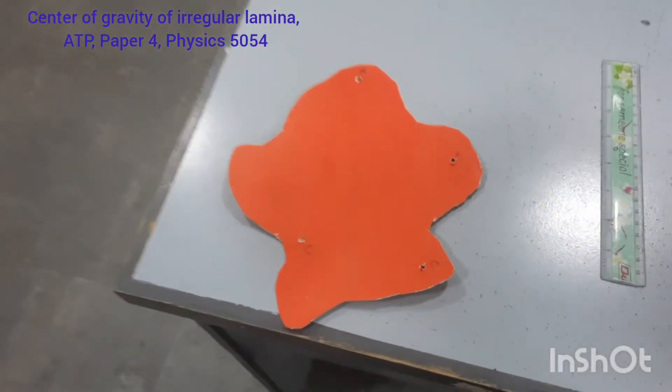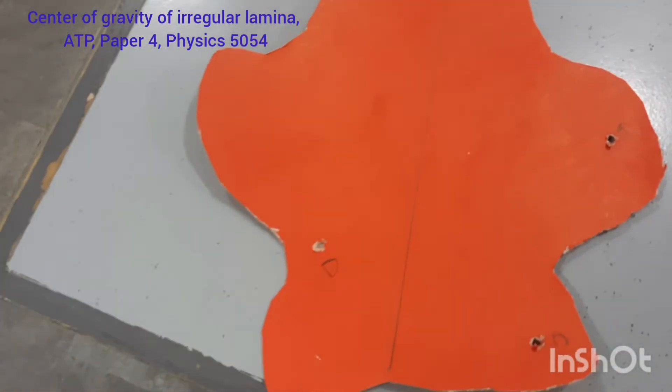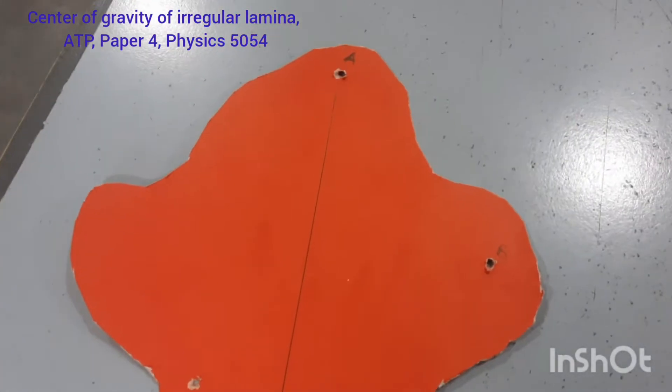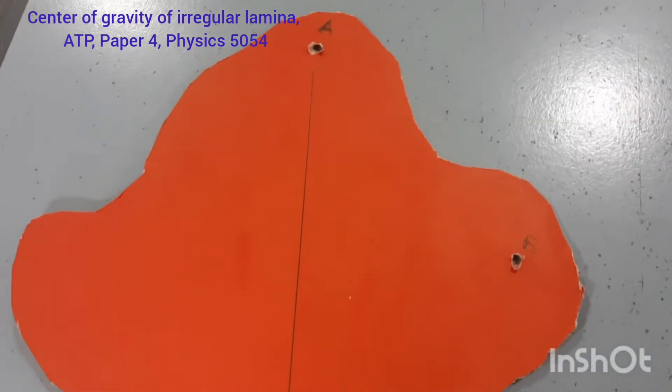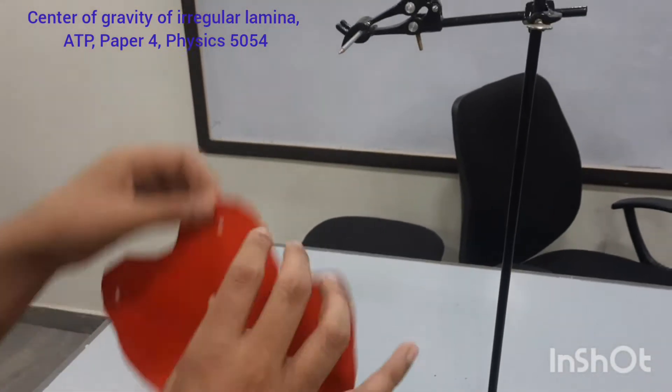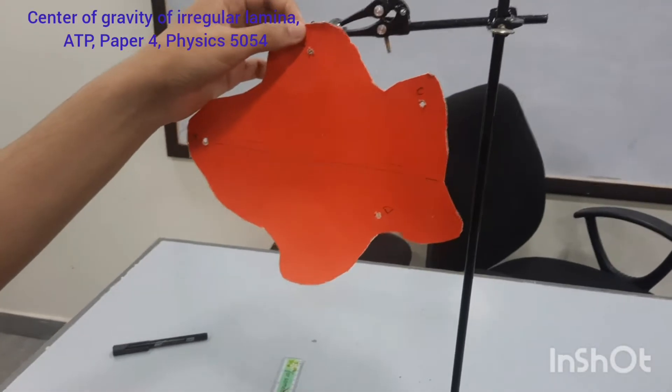Now we will hang it from another hole. For example, you can hang it from the D or you can hang it from the C or you can hang it from the B. So, it's up to you. Hang it from another hole.